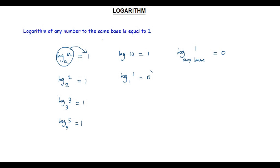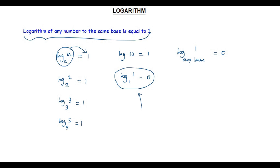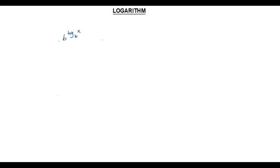Log 1 to any base is equal to 0, so log 1 to the base 1 is also equal to 0. Students must always remember: log 1 to the base 1 is not equal to 1, it is equal to 0, because log 1 to any base is equal to 0. For all remaining values except 1, if the base and argument are the same, then the value of that logarithm is equal to 1.